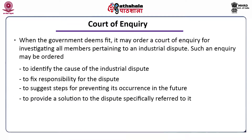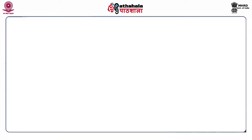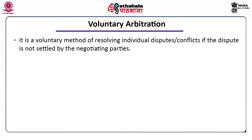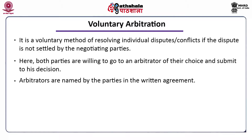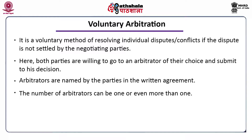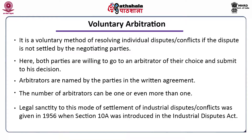Voluntary arbitration is a voluntary method of resolving individual disputes if the dispute is not settled by the negotiating parties. Both parties are willing to go to an arbitrator of their choice and submit to his decision. Arbitrators are named by the parties in a written agreement, and the number of arbitrators can be one or more. Legal sanctity to this mode of settlement was given in 1956 when Section 10A was introduced in the Industrial Disputes Act.